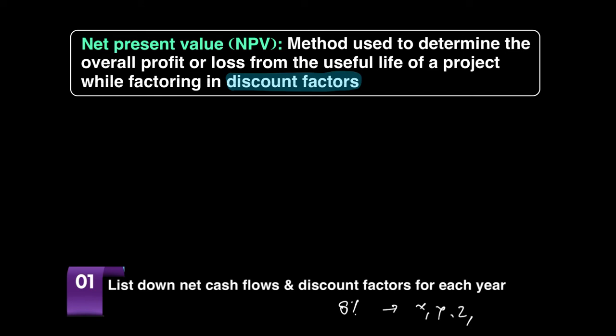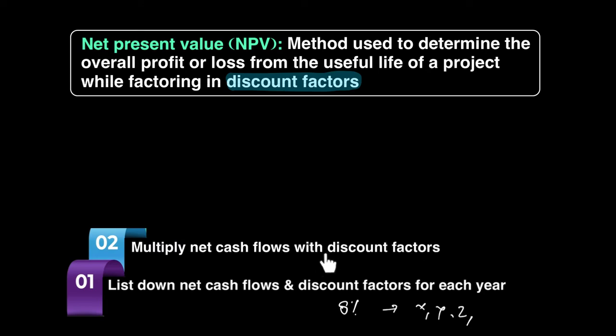From there, you go to step number two. And step number two is that you multiply the net cash flows with the discount factors. You'll remember, and when you watch the discount factor video, you will see this again, that that's how you get what we know as discounted cash flows. And that's what we want. We want our discounted cash flow so that we can use it in our calculation further. So the answer to this, what we're looking for, is called discounted CF for cash flow.